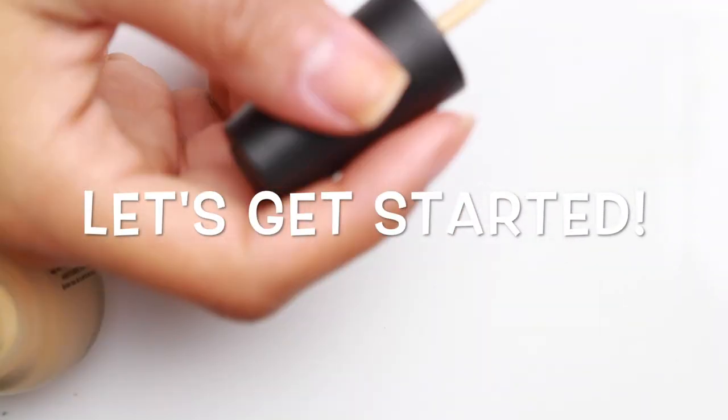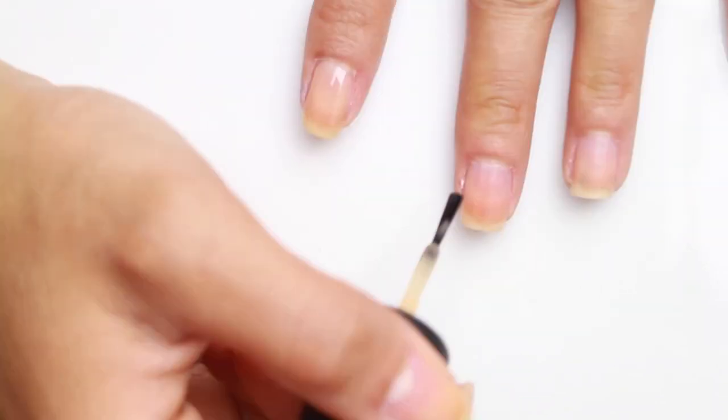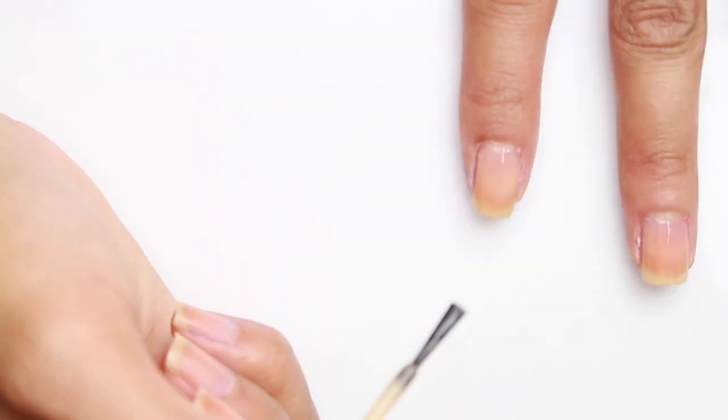Okay, so let's get started. You always want to start with your base coat. It's very important because it will maintain your nail polish longer and it will help the nail polish adhere to your nail a lot better.